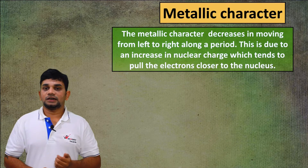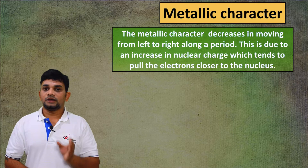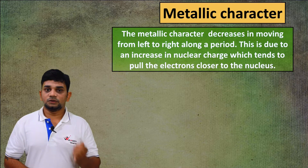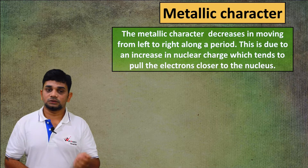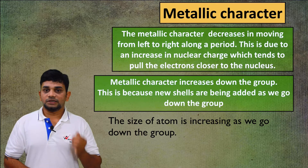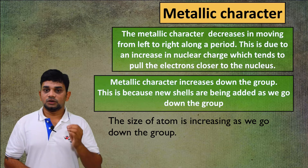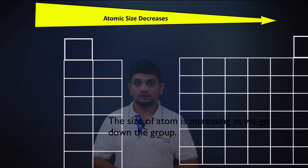Metallic character decreases moving from left to right along the period. This is due to an increase in nuclear charge, which tends to pull the electrons closer to the nucleus. Metallic character increases down the group because new shells are being added as we go down the group.